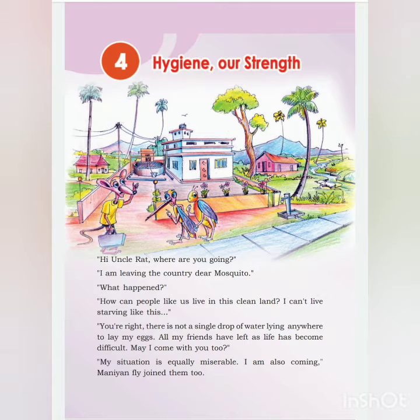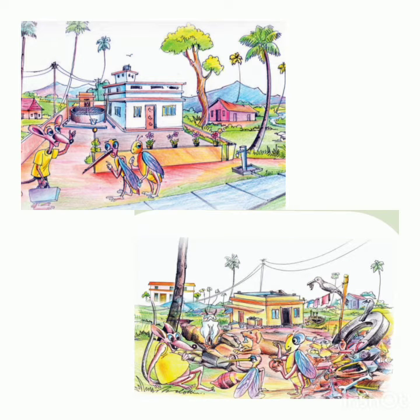Hello children, today we will start the fourth lesson of EVS, that is 'Hygiene: Our Strength.' Look here — you can find two pictures. What differences can you find in these two pictures? The picture on the left side is very neat and clean, and the picture on the right side is very dirty.